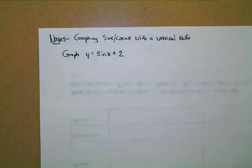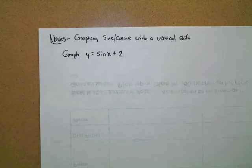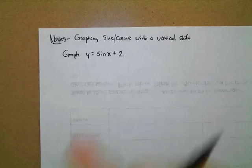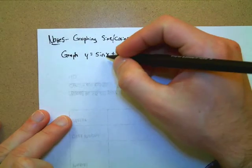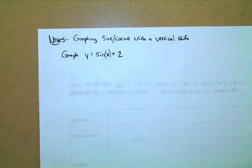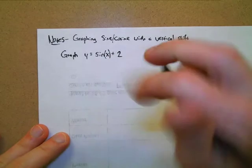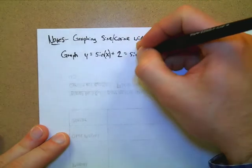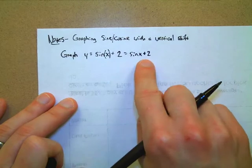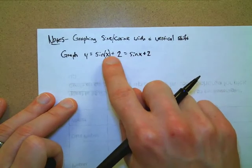We're going to graph y equals sine of x plus two. How can I know that the plus two is not inside the sine function with the x? No parentheses, right. The only thing inside the sine here is the x. There's an understood set of parentheses right there. If you see sine of x plus two like this, that means the x is in the parentheses and the plus two is outside the parentheses.